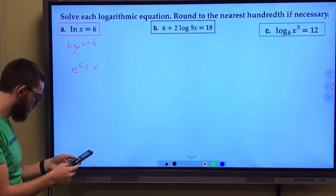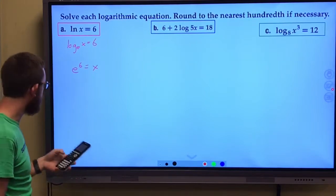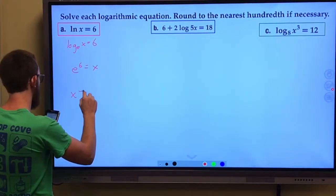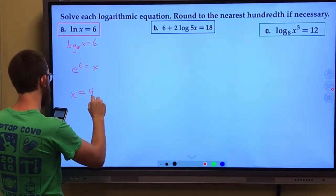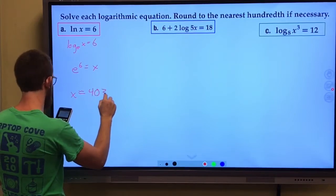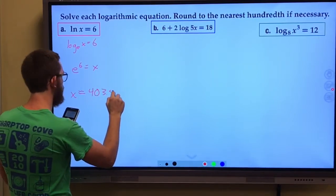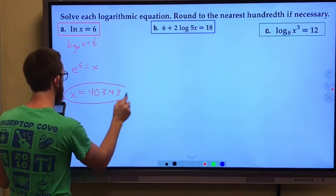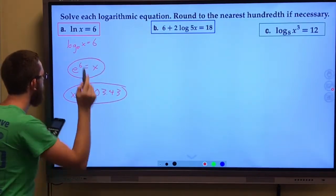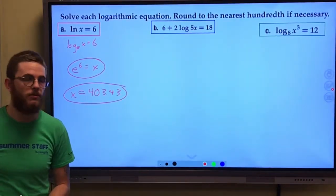But let's see here, e to the power of six gives us, rounded to the hundredths place 403.43. You also could leave it as just e to the power of six.